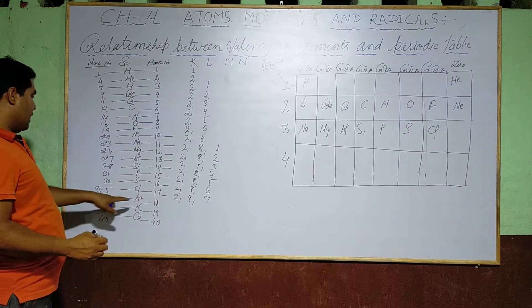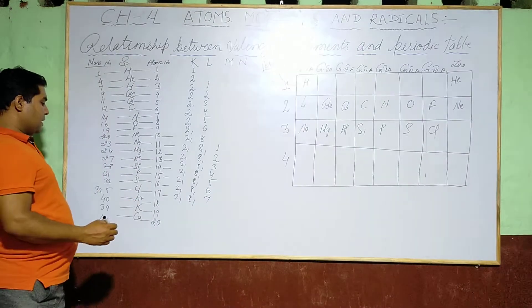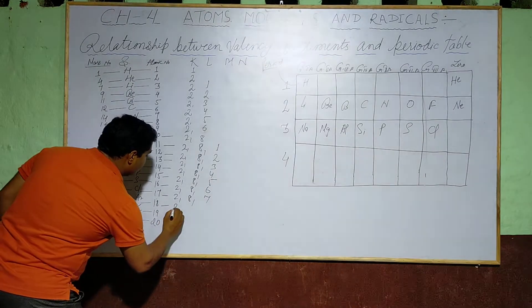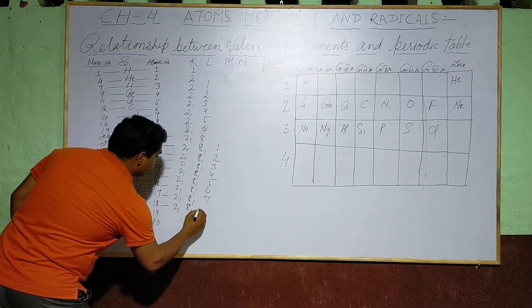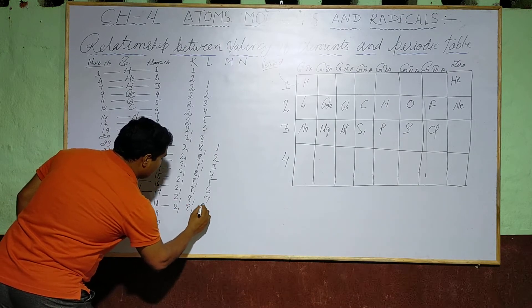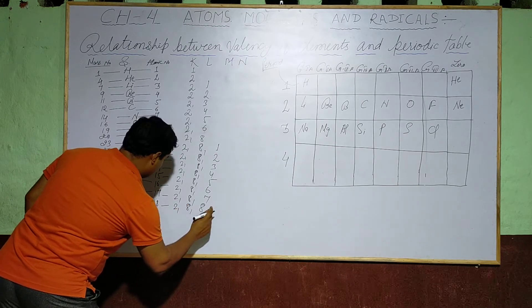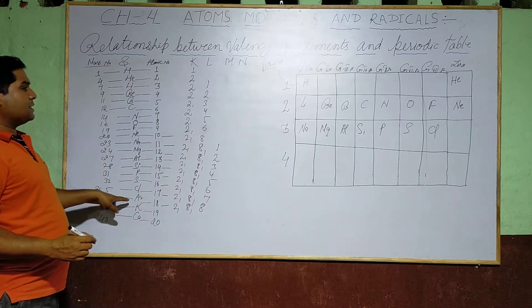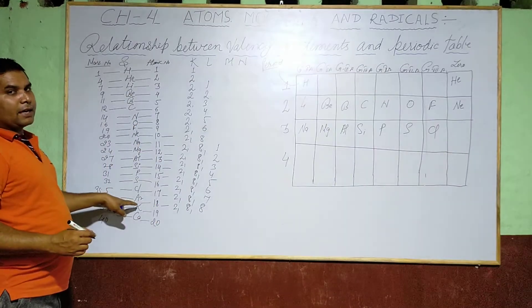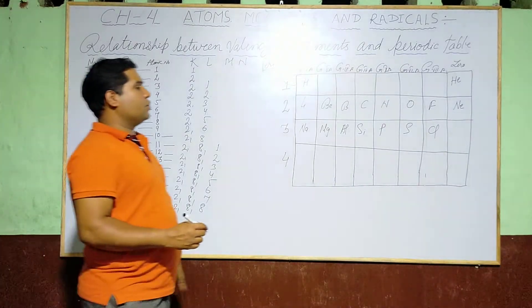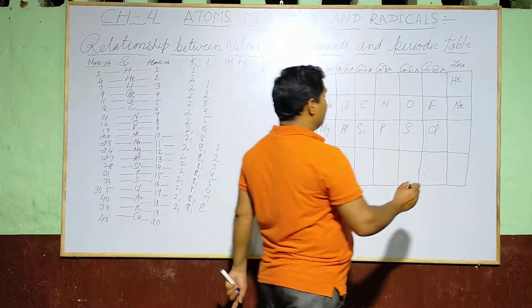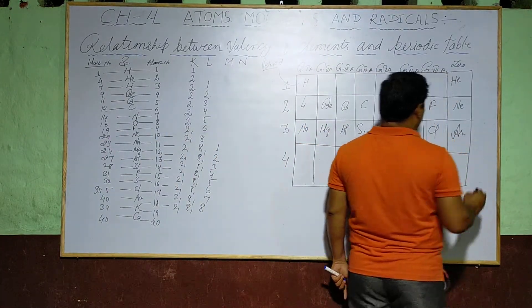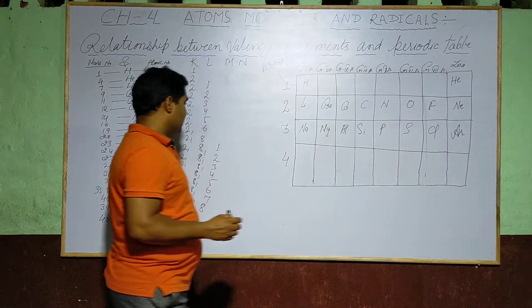Argon has atomic number 18, configuration 2, 8, and 8. As Argon is an inert gas, it is placed in the zero-valency group, Period 3.